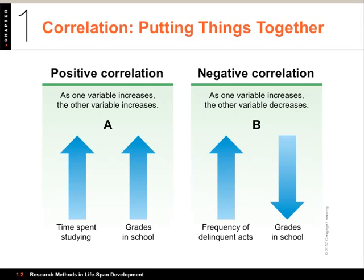Here on the left side we have a positive correlation: the more time you spend studying, the better your grades in school — that's generally true. On the other hand, you can have a negative correlation where higher values on one variable are associated with lower values on the other. For instance, frequency of delinquent acts — the more juvenile crime a person is involved in, the lower their grades in school. So time spent studying has a positive association with grades, and delinquent acts have a negative association with grades.